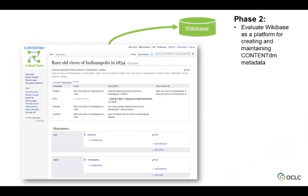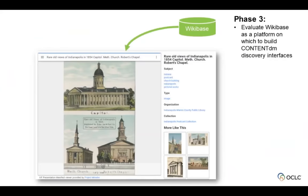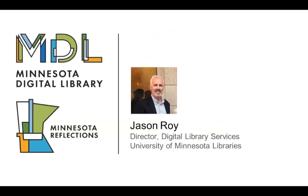Phase two, which we're about to launch into, will evaluate Wikibase as a platform for actually creating and maintaining this ContentDM metadata as opposed to just storing mapped data. Phase three will evaluate Wikibase as a platform on which we can build a new ContentDM discovery interface — can we imagine building a brand new discovery layer on top of the graph data we're producing? With that overview, I'll turn things over to Jason Roy to give some feedback about their current interests and takeaways from the project.